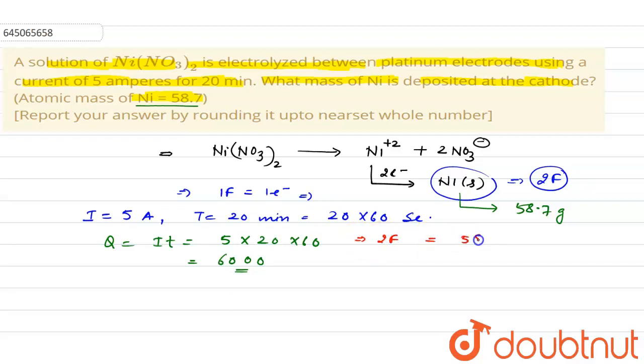One faraday will deposit 58.7 divided by 2 faraday, and 6000 will deposit 58.7 divided by 2 into faraday. One faraday is 96500, multiply by 6000. On solving it further, we will get the mass equals to 1.82 grams.